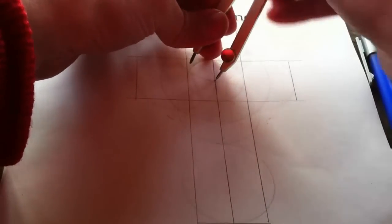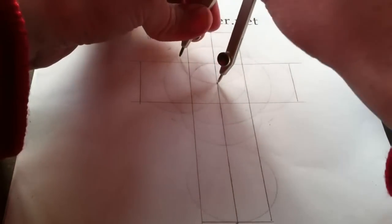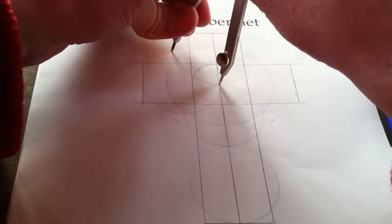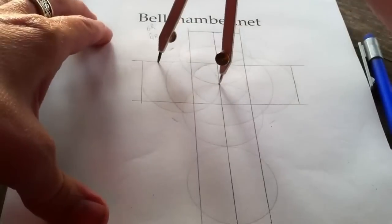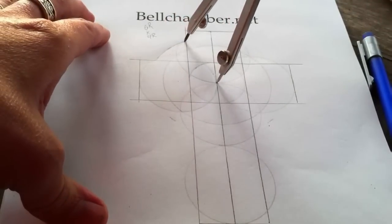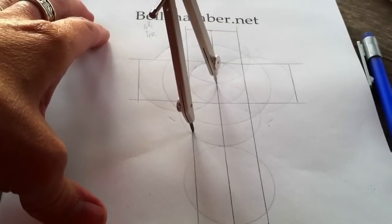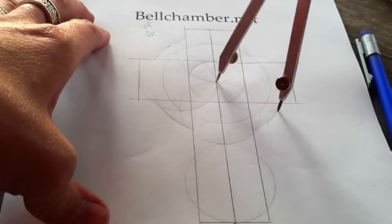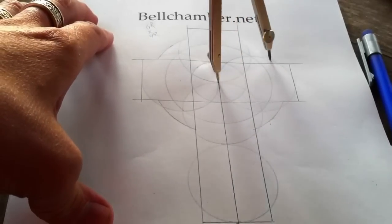Change the radius of your compass to this radius and mark it here, and here, here, and here.